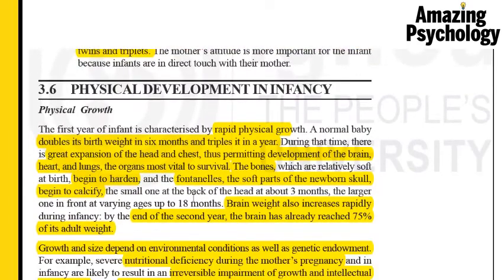Now let's look at the physical developments that occur in an infant between the ages of 0 and 2 — from birth to two years old. This is a phase of rapid growth. During this stage, the child's birth weight doubles in the first six months and triples in the first year. So if the child was about 3 kg at birth, by six months it will be 6 kg, and by one year it will be 9 kg. There is heavy expansion of the head and chest, which helps in the development of the brain, heart, and lungs — vital organs for survival.